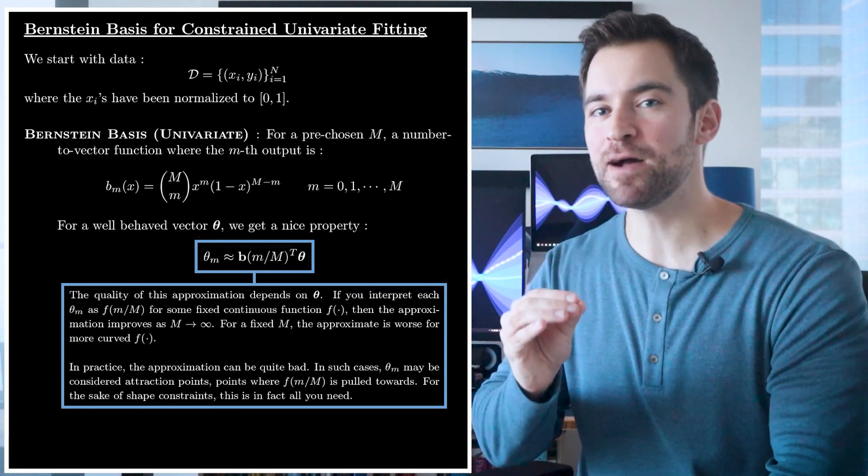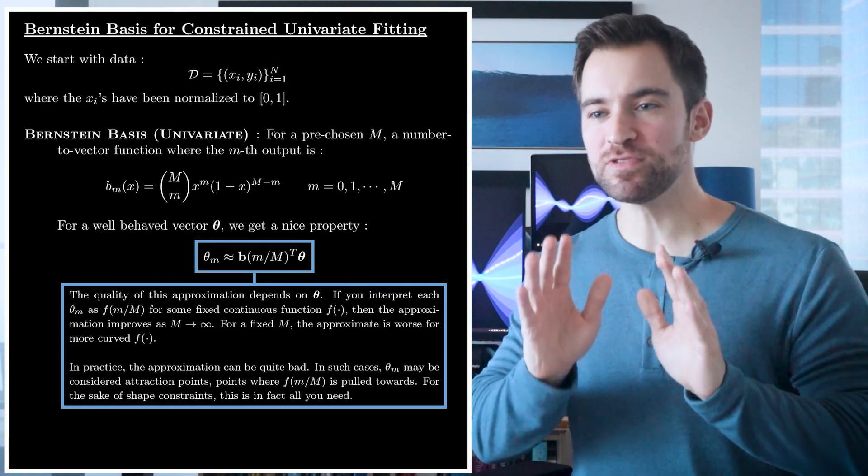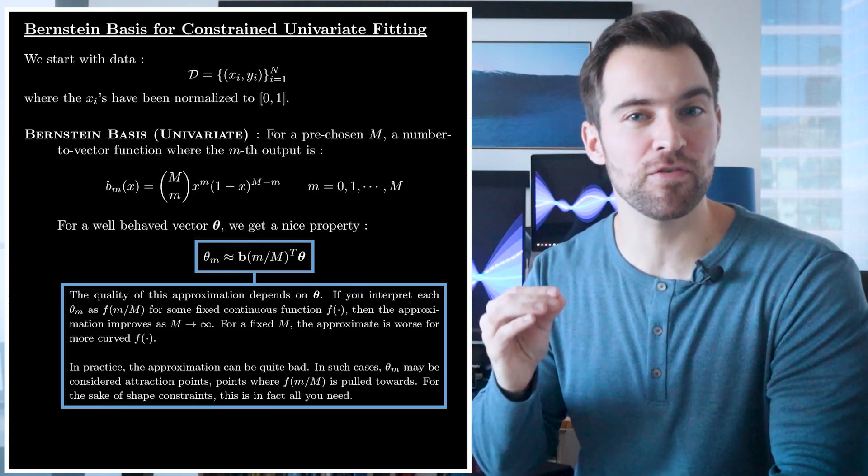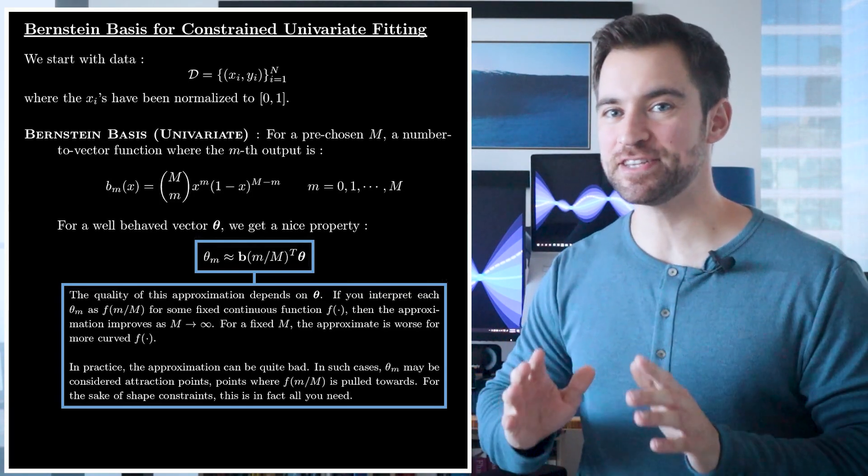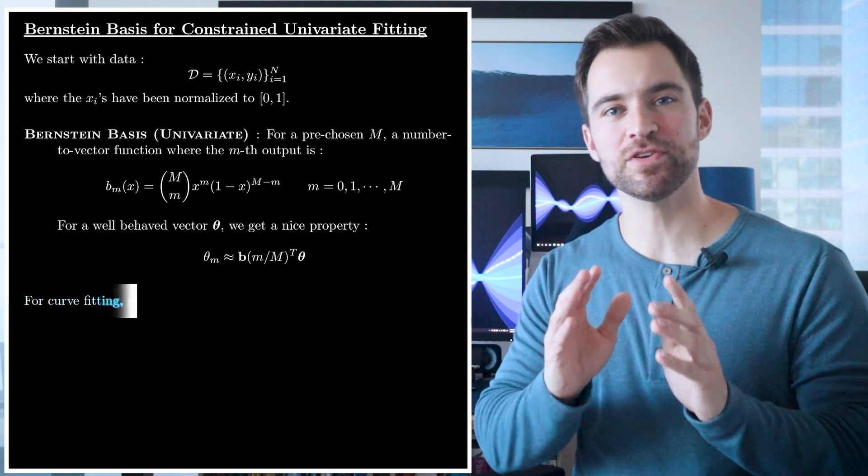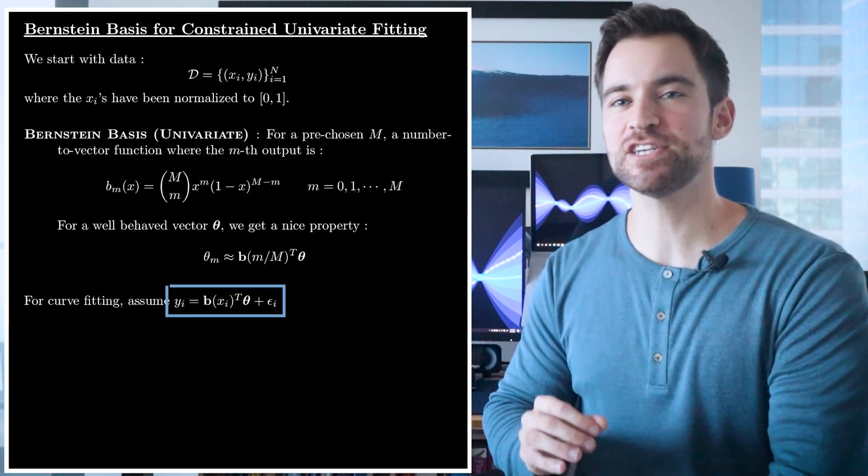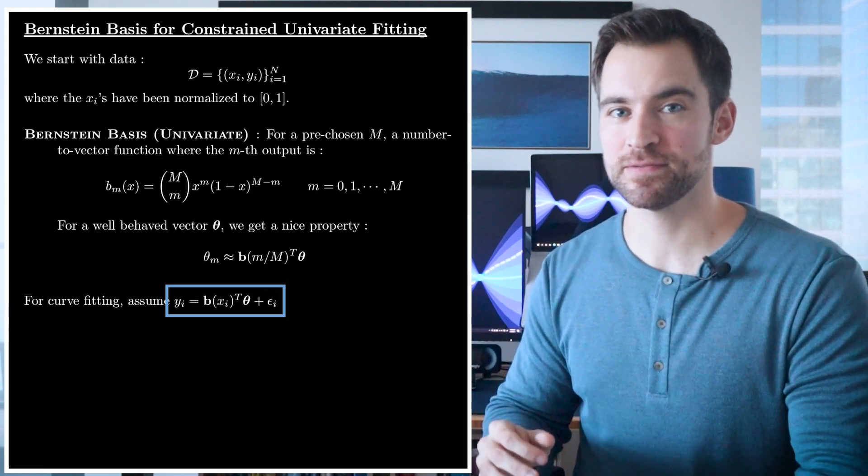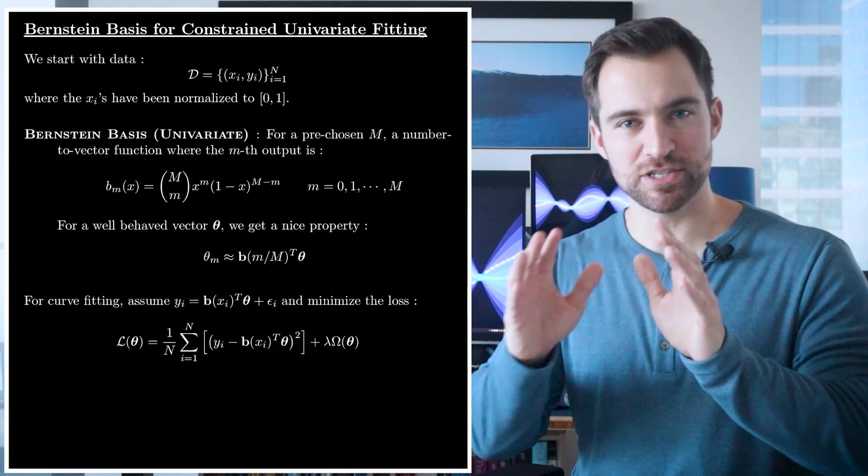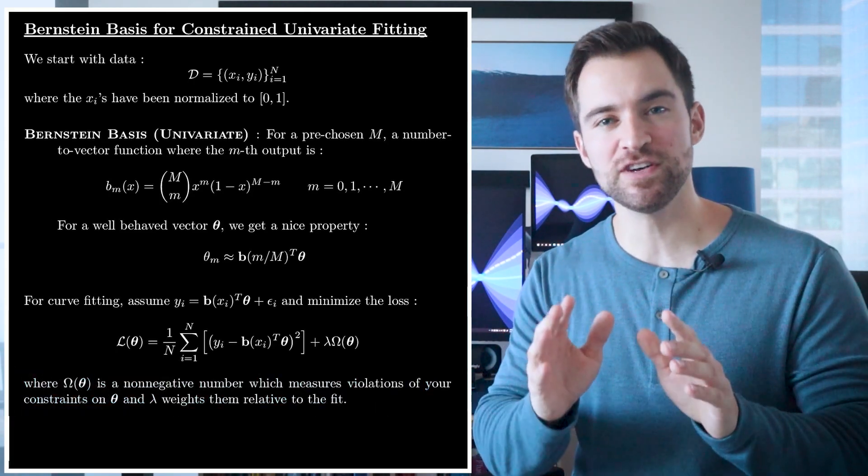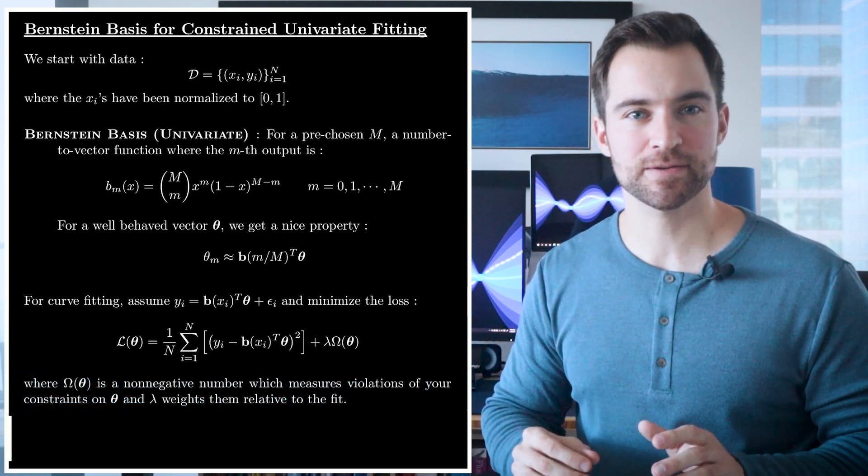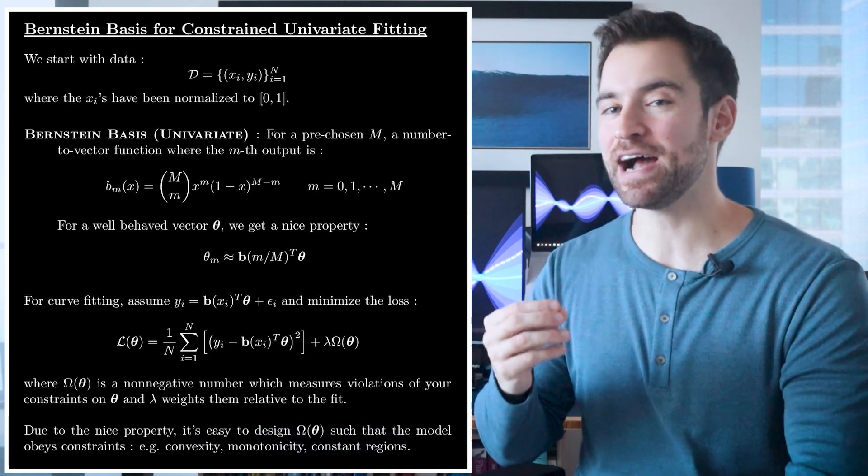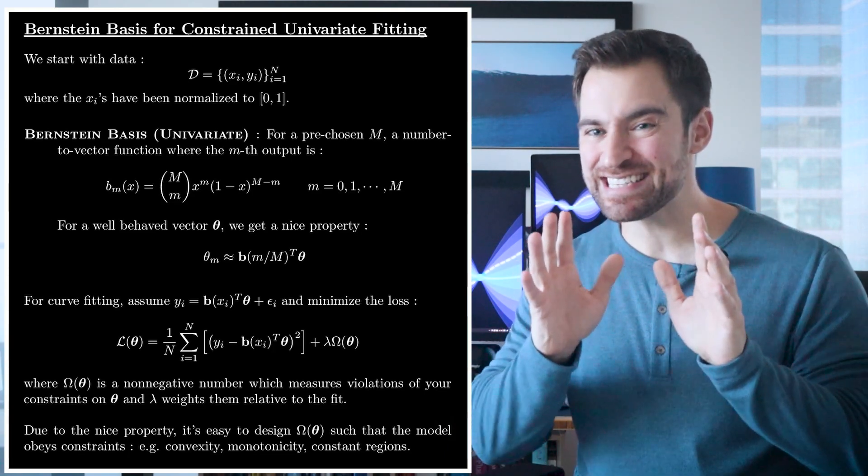In linear regression, this dot product is our model's prediction. So this relates in a super simple way to model's predictions at certain points with certain coefficients. So that leads to the following idea. For modeling, first make the linear regression assumption. Yi is the dot product of our basic expansion on x with our coefficient vector plus some noise. Then form this loss, which is mean squared error plus a term that measures how much our coefficients deviate from our constraints. If that term is zero, that means our coefficients, and therefore the model outputs, are abiding by our rules.